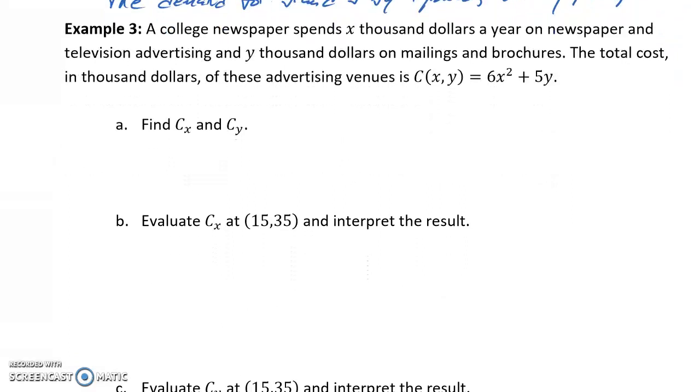In example 3, we have a college newspaper that spends X thousand dollars a year on newspaper and television advertising and Y thousand dollars on mailings and brochures. The total cost in thousands of dollars of these advertising venues is given by this function C(x,y) = 6x² + 5y.